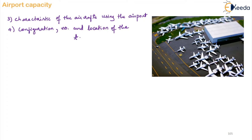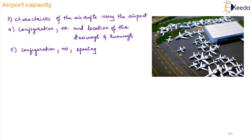The fourth factor is the configuration, number, and location — where exactly is the location of the taxiway as well as the runway. The fifth factor is again configuration, number, spacing — that is the distance between two runways — and the orientation, meaning at what angle is your runway oriented. The entire runway system will come into consideration here.